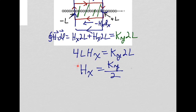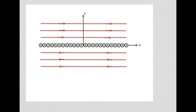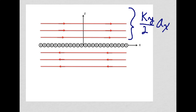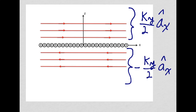In other words, the value of the magnetic field intensity is independent of how far away we are from our plane of current. So our final result is: when z is greater than zero, the magnetic field intensity equals K_y over 2 in the a_x direction. When we are below the sheet of current, the magnetic field intensity has amplitude K_y over 2 but in the minus a_x direction.